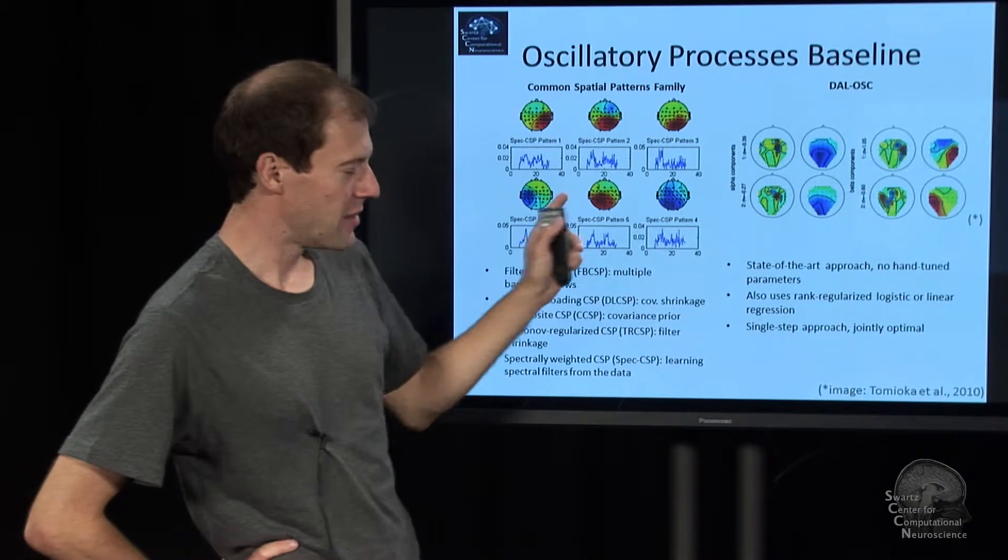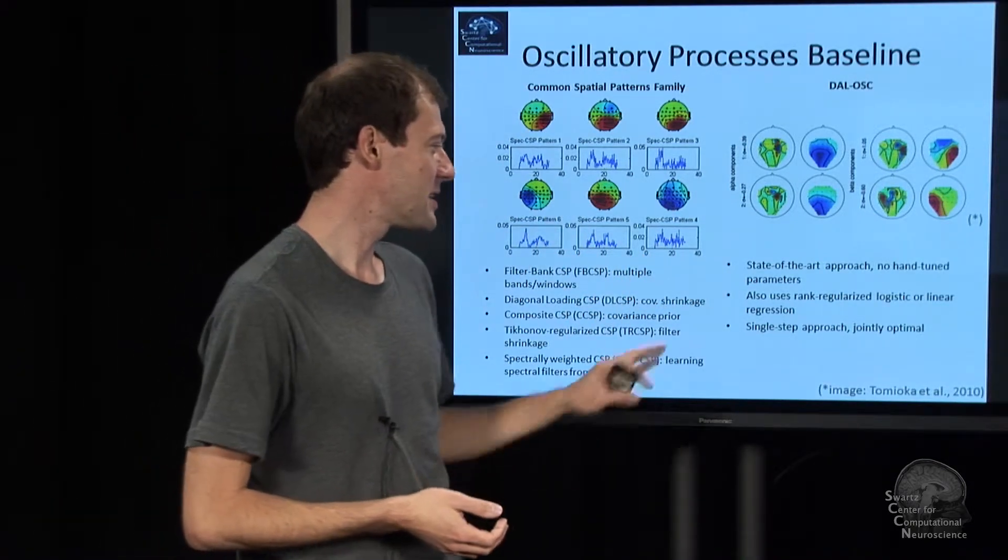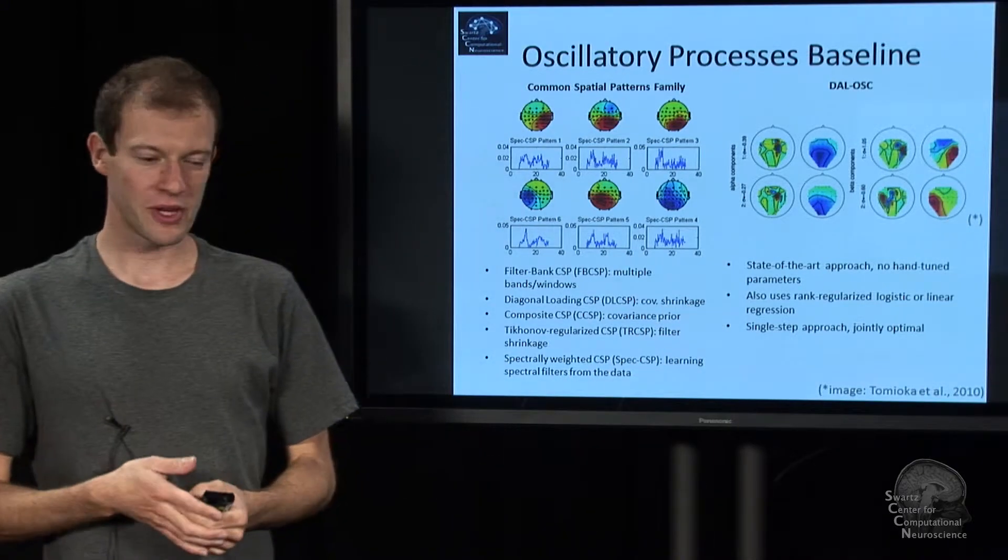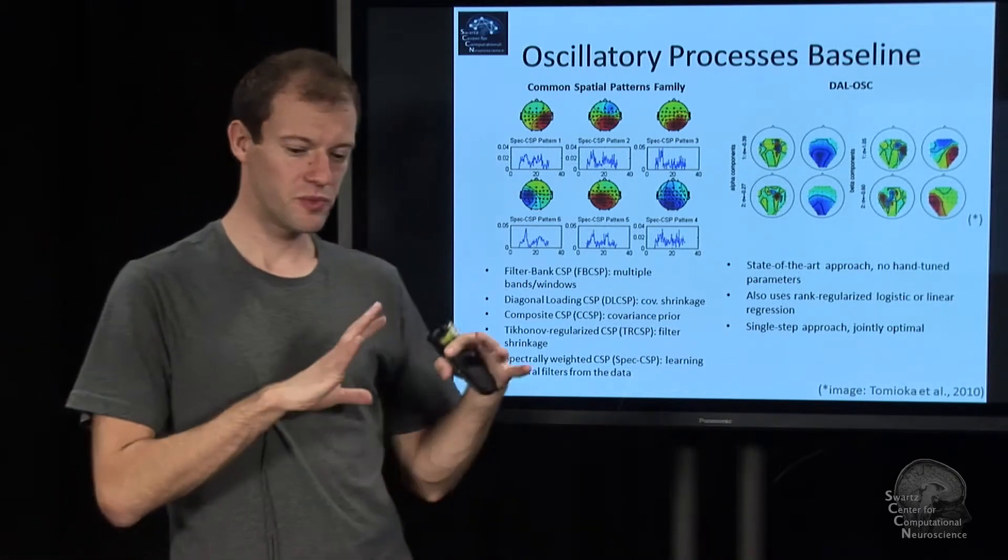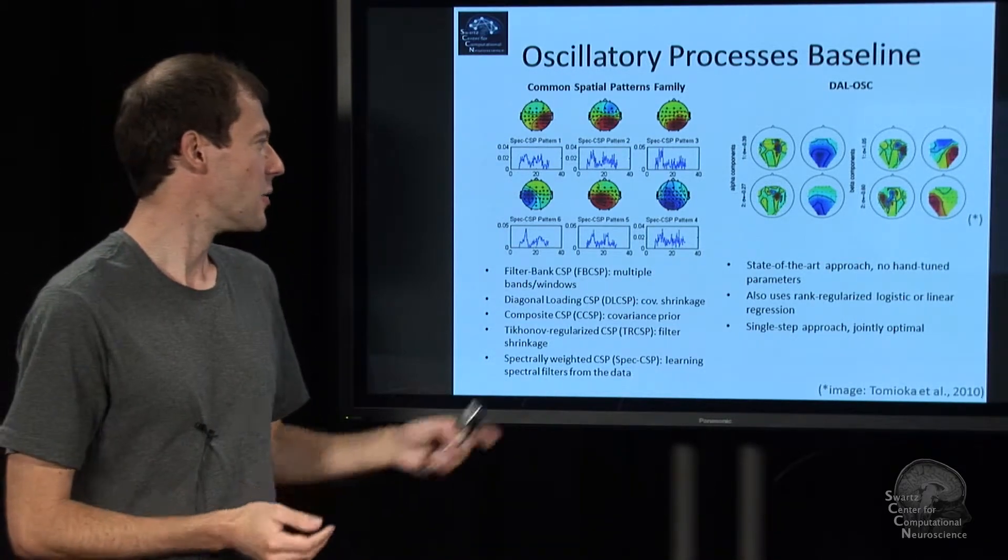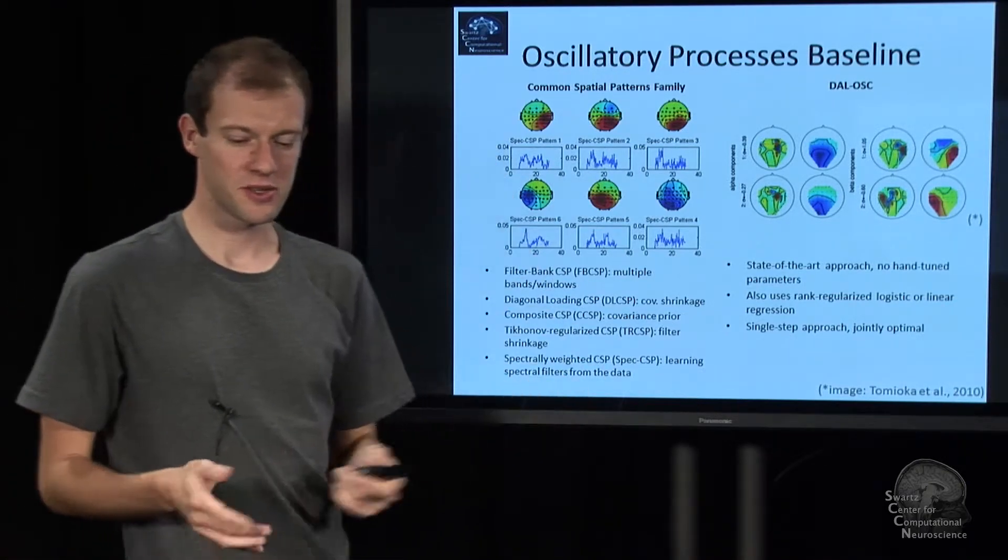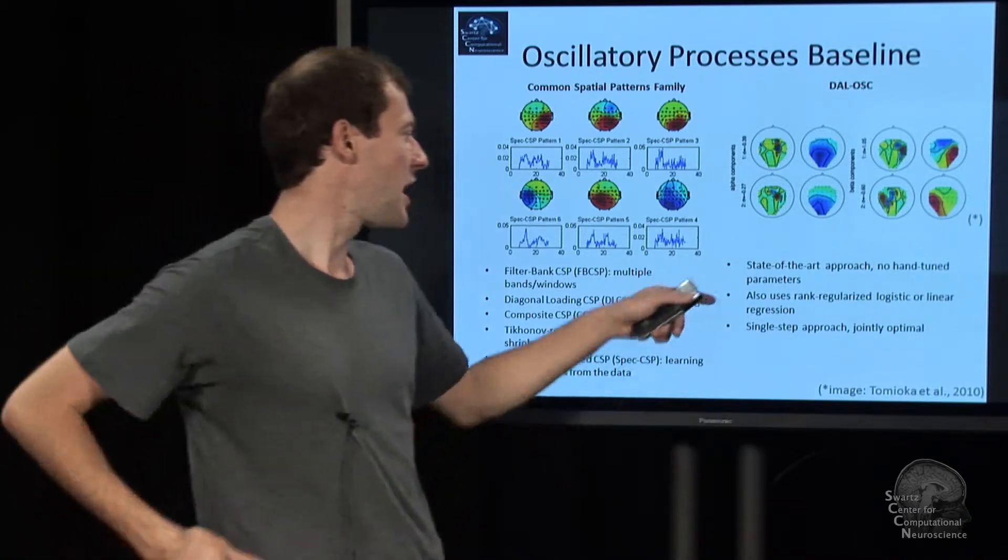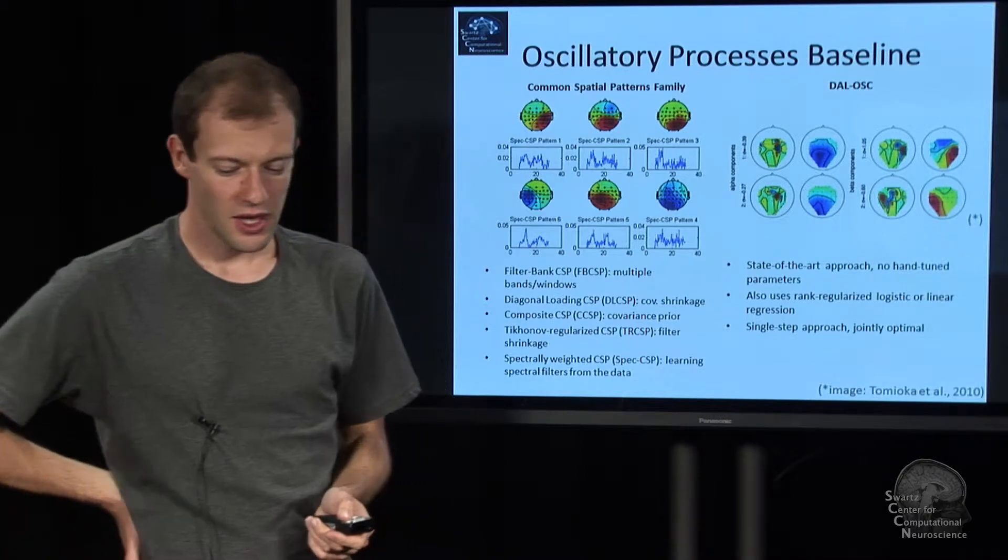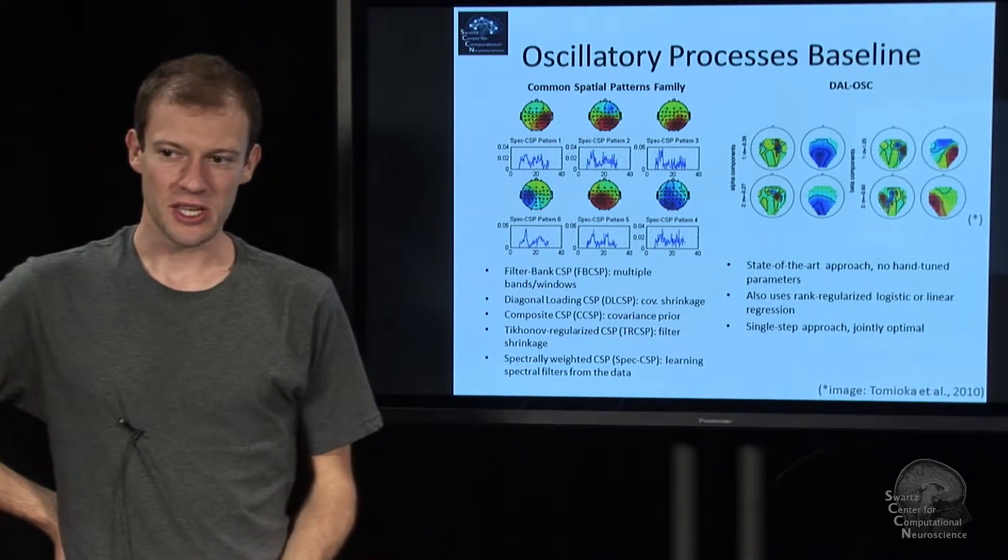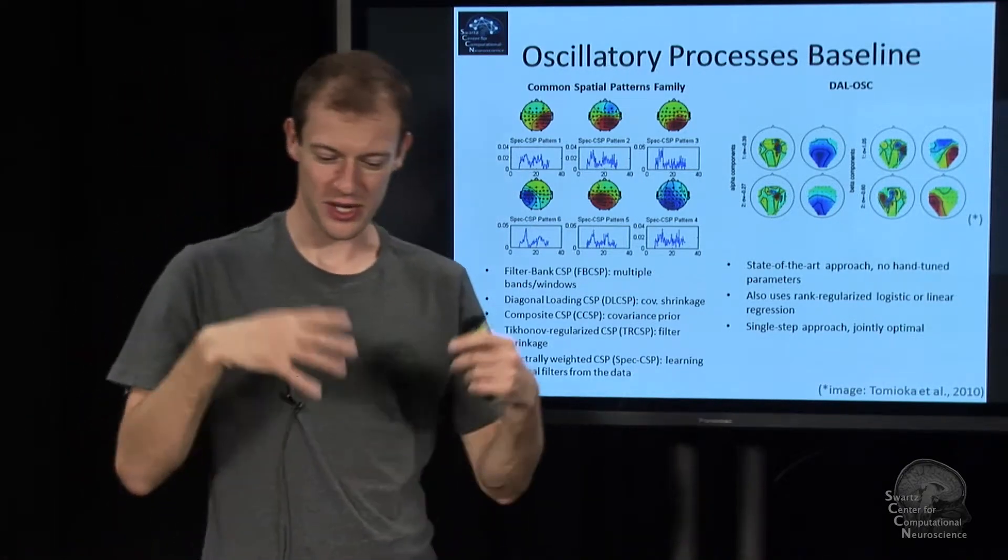DAL OSC runs much slower than CSP but it has the benefit that you can basically prove that the solution is optimal under some reasonable assumptions. What's neat about these kinds of methods is if the method doesn't find anything in your data, there's a very high chance that there's nothing in your data, as opposed to not knowing if the algorithm just failed.